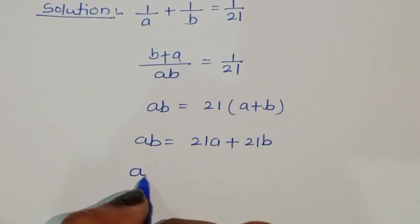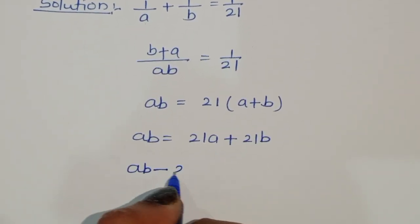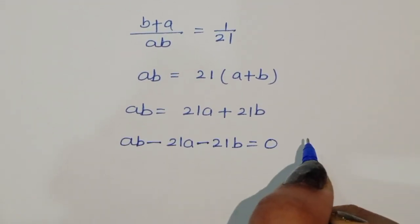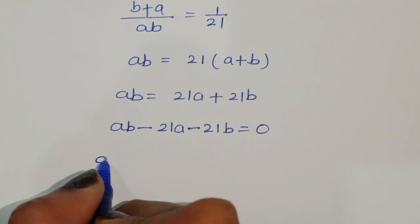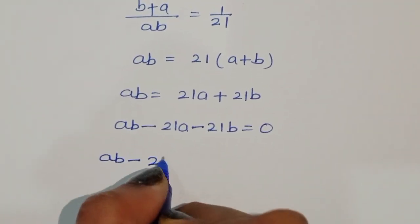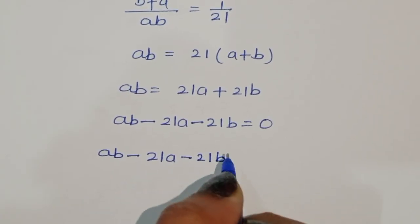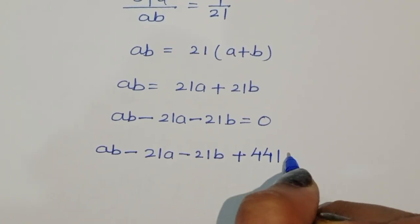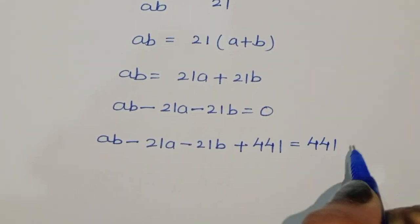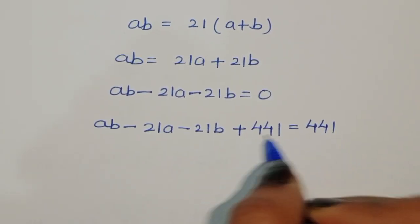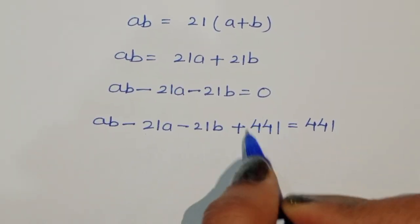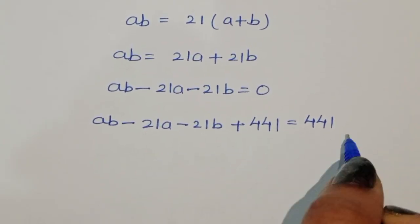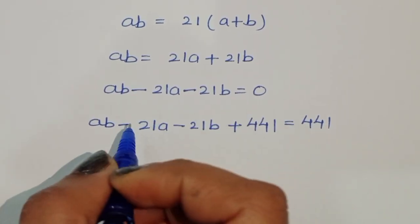Now ab minus 21a minus 21b is equal to 0. We can rewrite this by adding 441 to both sides, because 21 squared equals 441. So we are adding 441 in LHS and RHS.